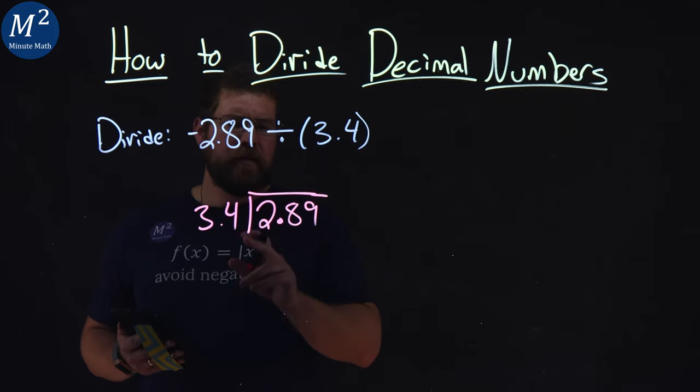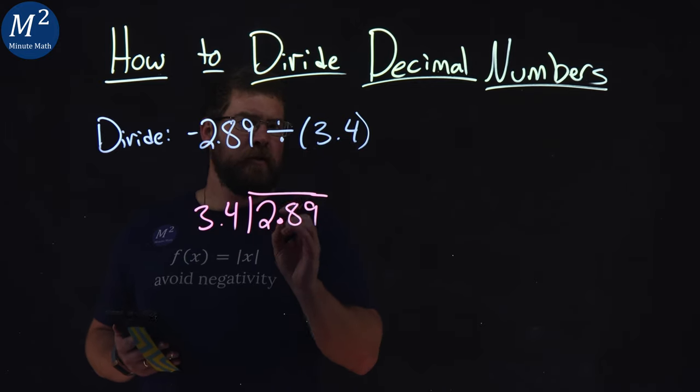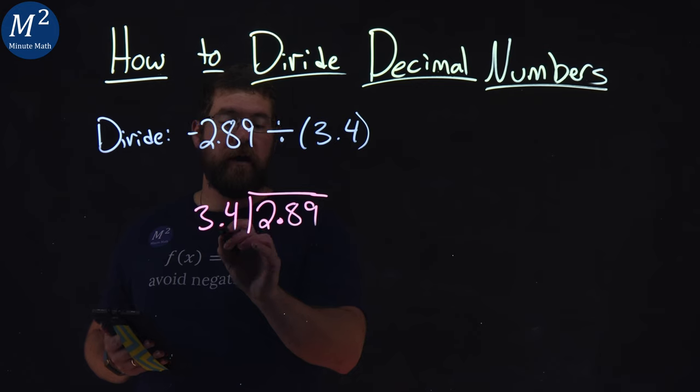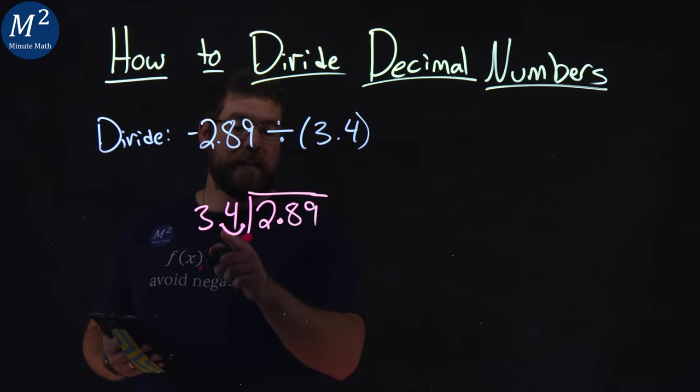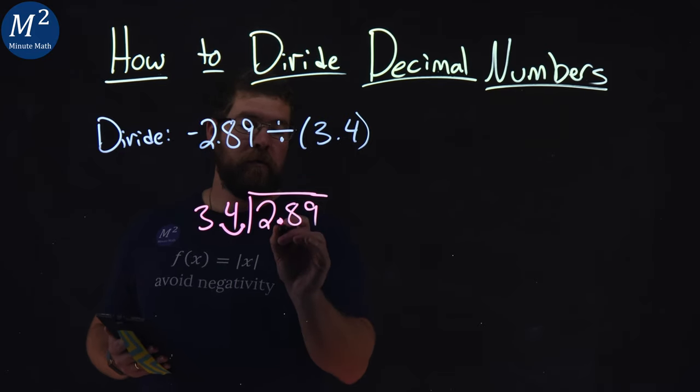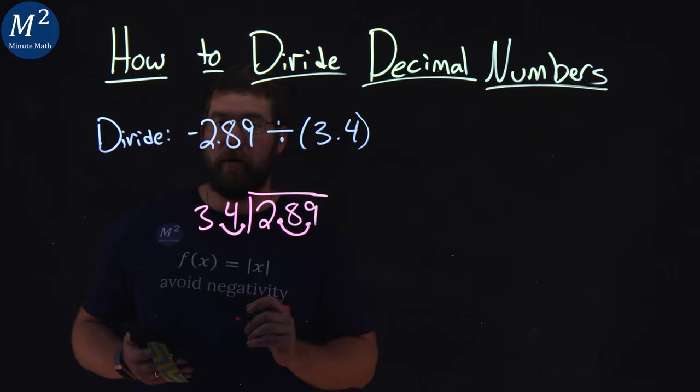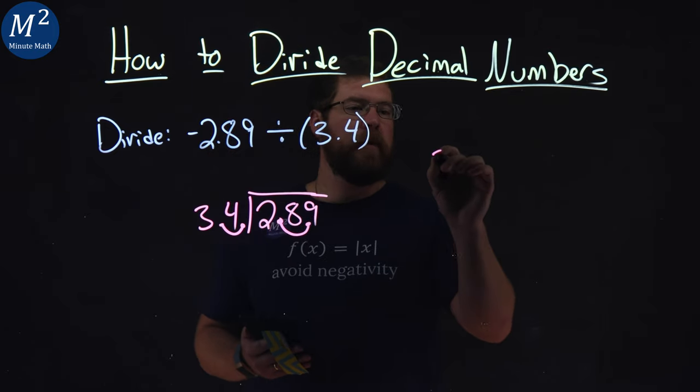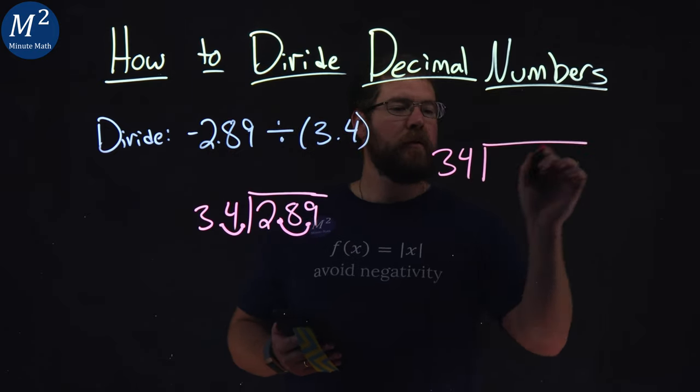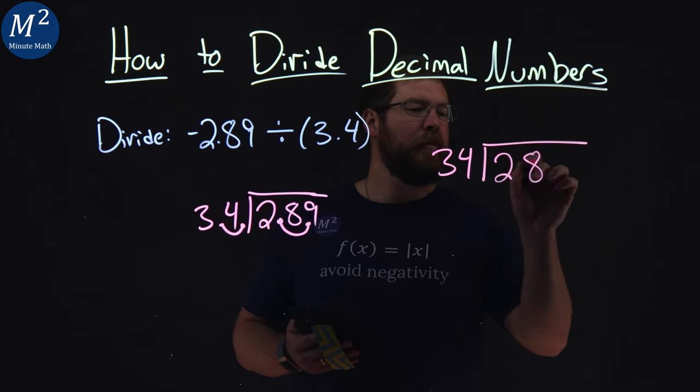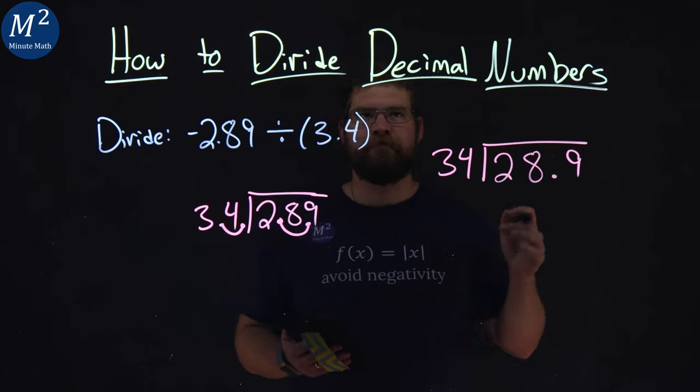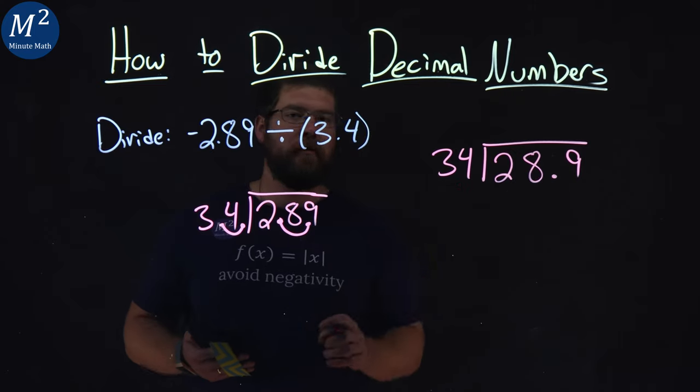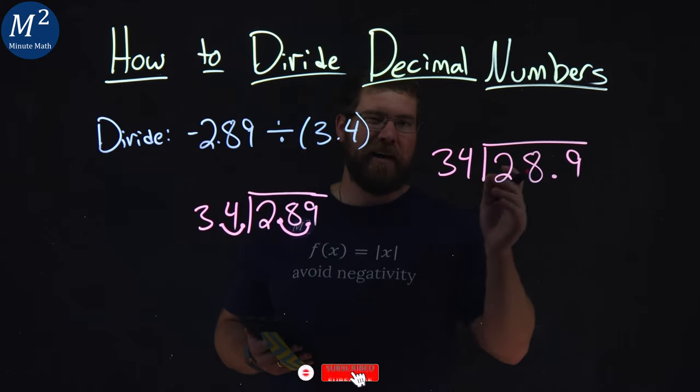Now, this is actually kind of difficult. What we want to do is convert the first number to be a whole number. 3.4 converted to be a whole number is 34, and we move that decimal place over 1, move the inside also over 1. So if I rewrote this, I'd have 34 goes into 28.9. These are equivalent problems. It makes it a lot easier when we have a whole number going into a decimal.